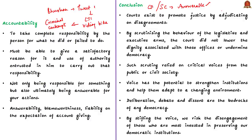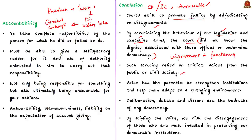While concluding this editorial, the author says that the courts exist to promote justice by adjudicating on disagreements. Courts usually take a very critical view of the other arms of government — the legislature and executive. Throughout the history of governance, by scrutinizing the behavior of the legislative and executive arms, the judiciary did not lower the dignity associated with those offices or undermine democracy. On the contrary, it in fact improved their functioning. Such scrutiny by the judiciary relied on the critical voices from the public and civil society. But in this case, the same judiciary, which is the guarantor of rights of the public, has punished a person from the public for being critical of its own functioning.